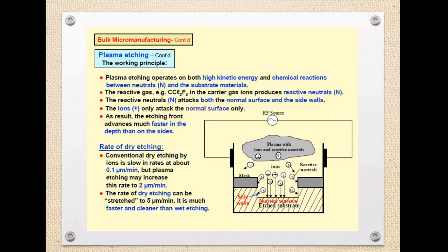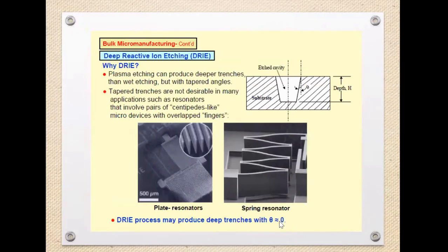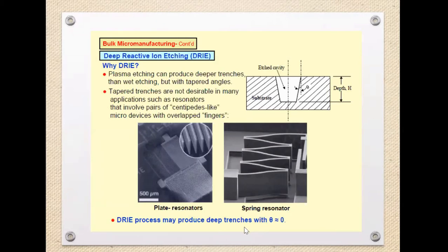Another technique for dry etching is Deep Reactive Ion Etching (DRIE). This plasma etching can produce deep trenches, but with trapped angles. The trapped trench angle theta is not desirable in many applications such as resonators involving comb-type electrodes, where we need parallel combinations. Therefore, we need to make theta — the trapped angle — equal to zero. The DRIE process can produce deep trenches with theta almost equal to zero.